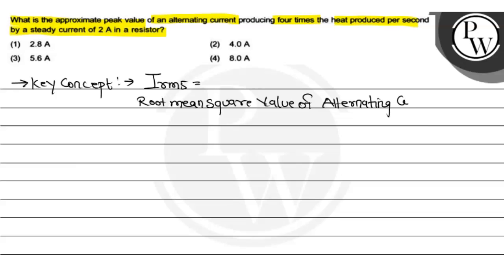I_rms formula - what is it? 2 times I_steady. Steady means DC current, direct current.